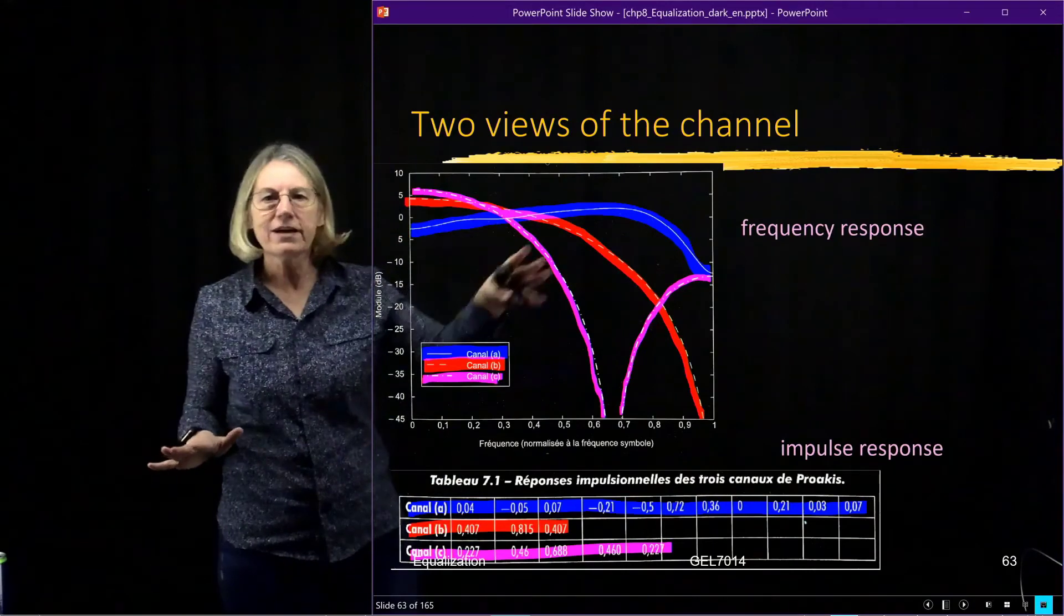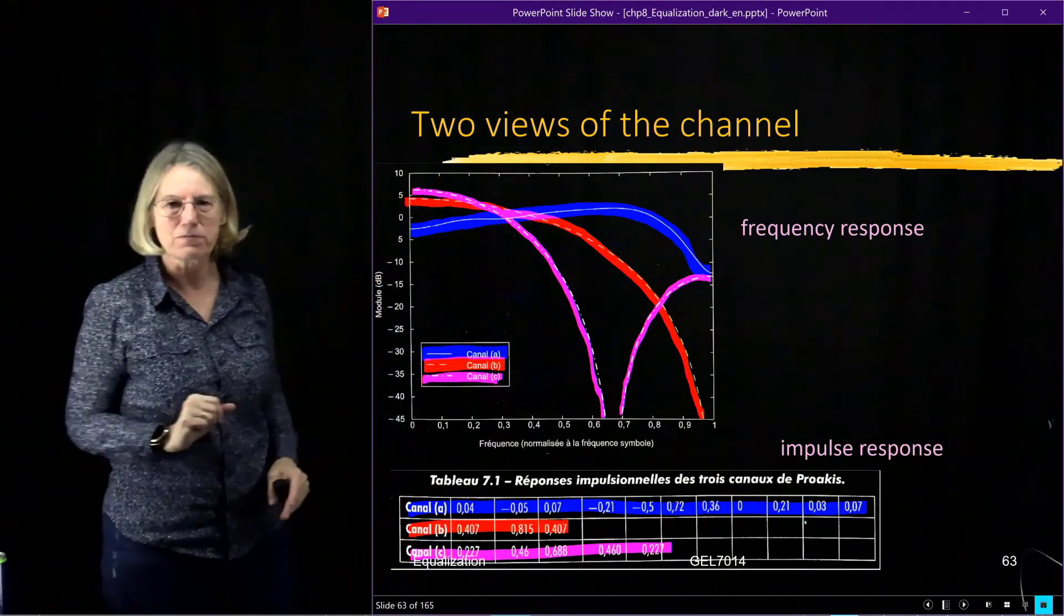Then I look at that pink one, the third one, channel C, and I say oh boy, here's this deep null. When I try and find the zero forcing equalizer I'm going to get some terrible results from that null, so I'm thinking I'm going to have trouble with that.